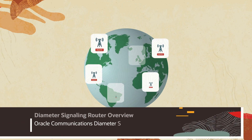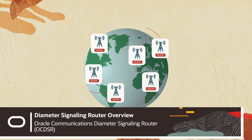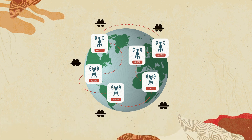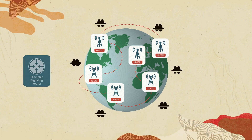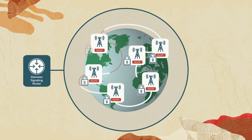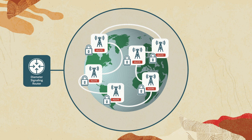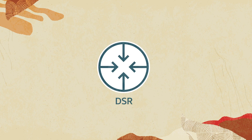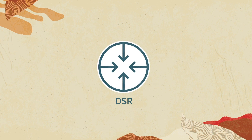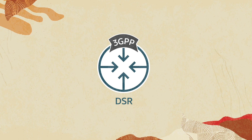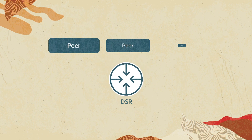With the evolution of the 4G or LTE network, operators are looking for a robust solution to strengthen and secure their diameter messages. A centralized diameter routing solution reduces the cost and complexity of the core network and allows it to grow incrementally to support increasing service and traffic demands. Oracle Communications Diameter Signaling Router, or DSR, is a 3GPP-defined 4G network node that processes diameter messages in a 4G network.